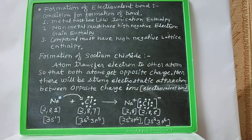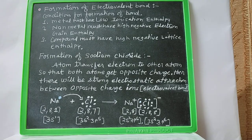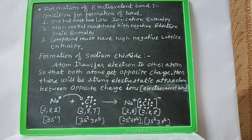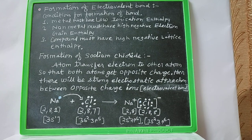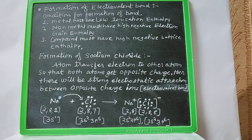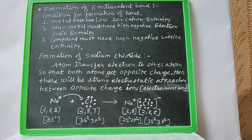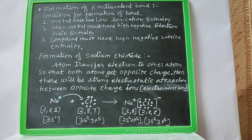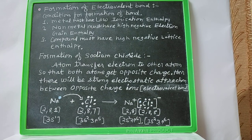The conditions for formation of an electrovalent bond are: the metal must have low ionization enthalpy, the non-metal must have high negative electron gain enthalpy, and the compound must have high negative lattice enthalpy. We can understand the formation of an electrovalent bond by taking the example of sodium chloride: the sodium atom transfers one electron to the chlorine atom.